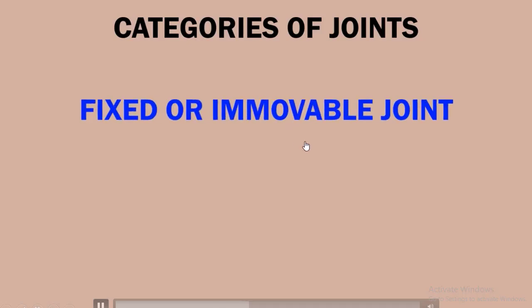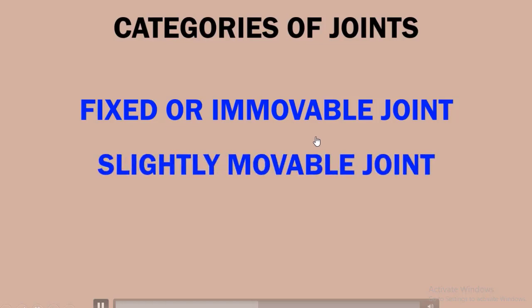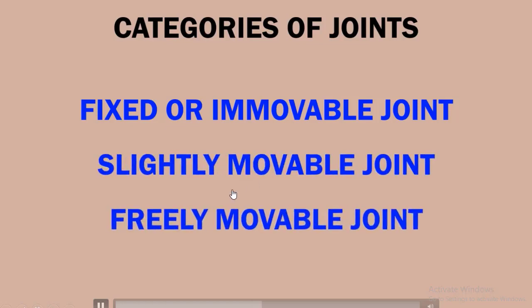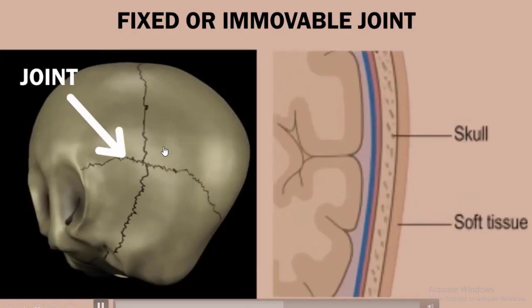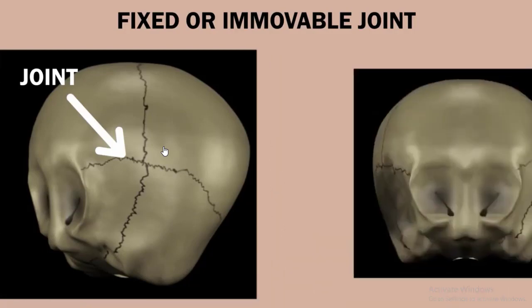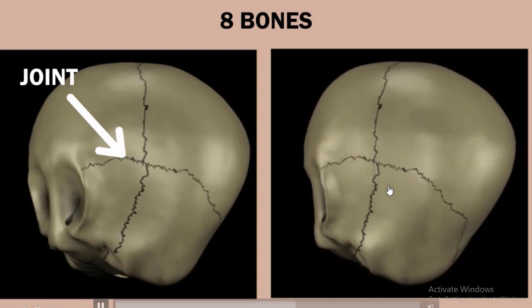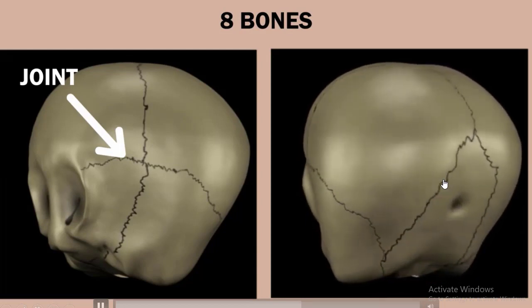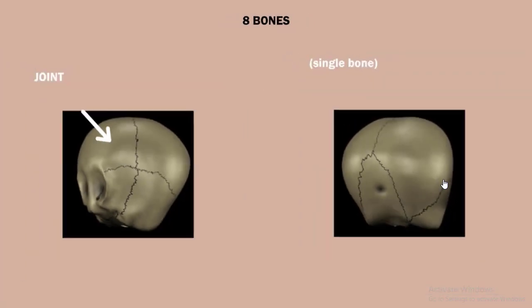Joints can also be categorized by the type of movement they allow: fixed or immovable joints, slightly movable joints, and freely movable joints. Fixed or immovable joints — example: the joints between the bones of the skull. The skull has eight bones joined by serrated joints, which change into bone after growing older, becoming like a single bone.